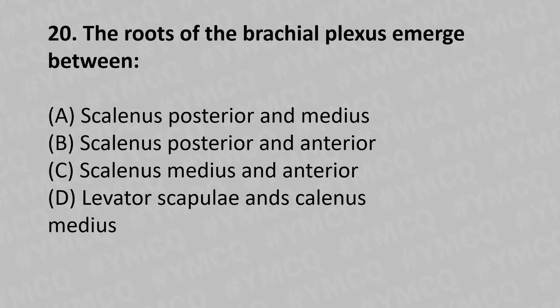Moving to our twentieth question: the roots of the brachial plexus emerge between which muscles? Option A: scalenus posterior and medius. Option B: scalenus posterior and anterior. Option C: scalenus medius and anterior. Option D: levator scapulae and scalenus medius. The answer is Option C: scalenus medius and anterior.